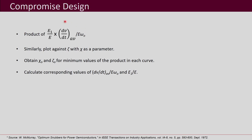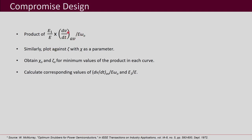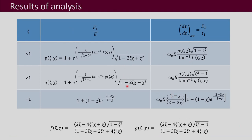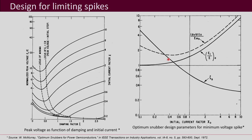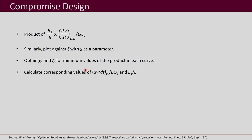In the compromise design, we use the product of the normalized ratio E1/E and the normalized dv/dt average by E·omega0 — we multiply these two together and based on it we do the compromise design. We take chi as a parameter, vary zeta, substitute those values into the different functions, and plot the results. At a certain value of zeta0, the product reaches a minimum.